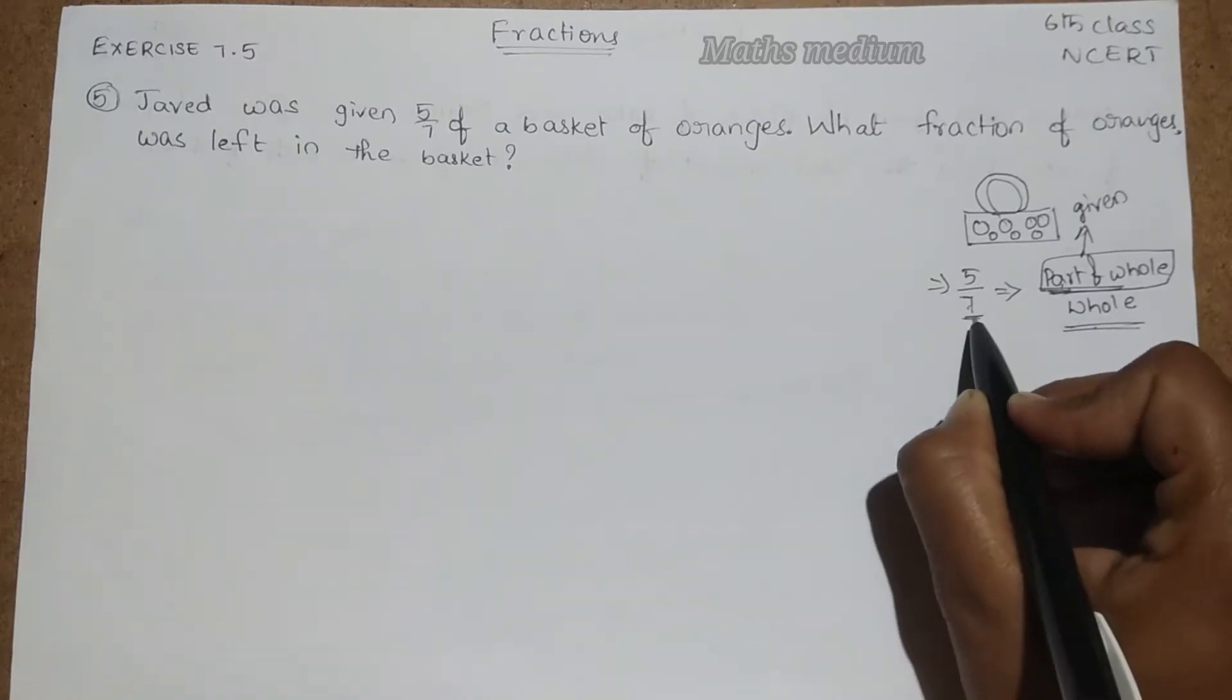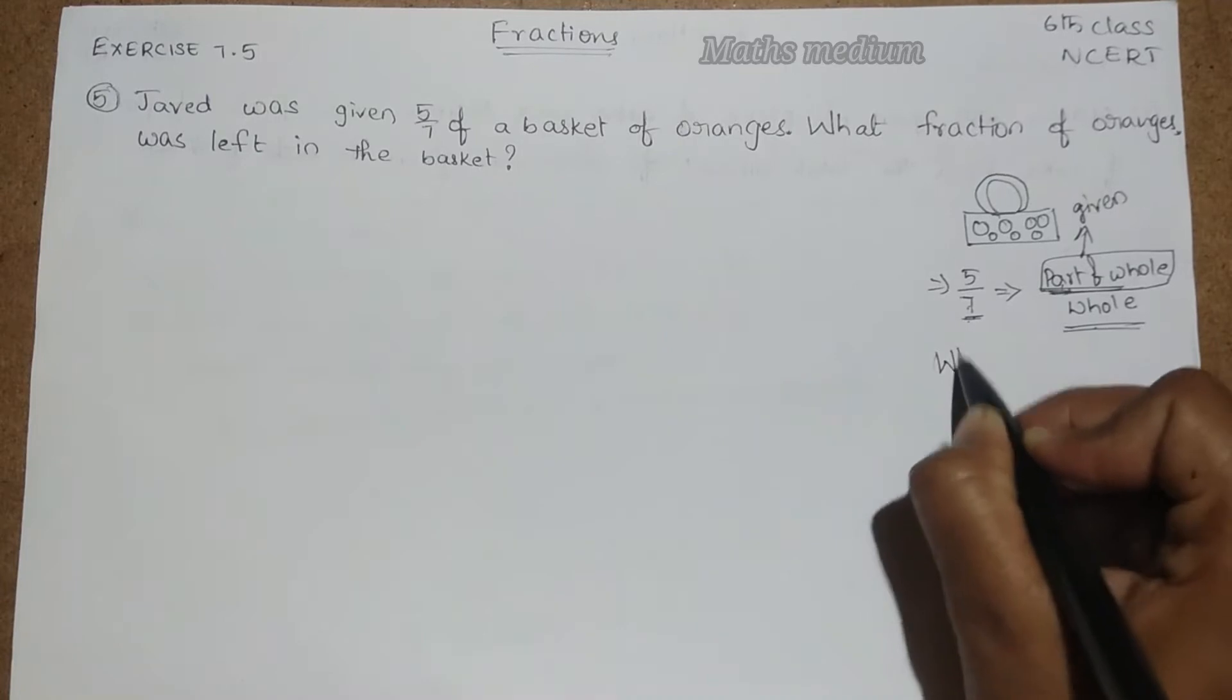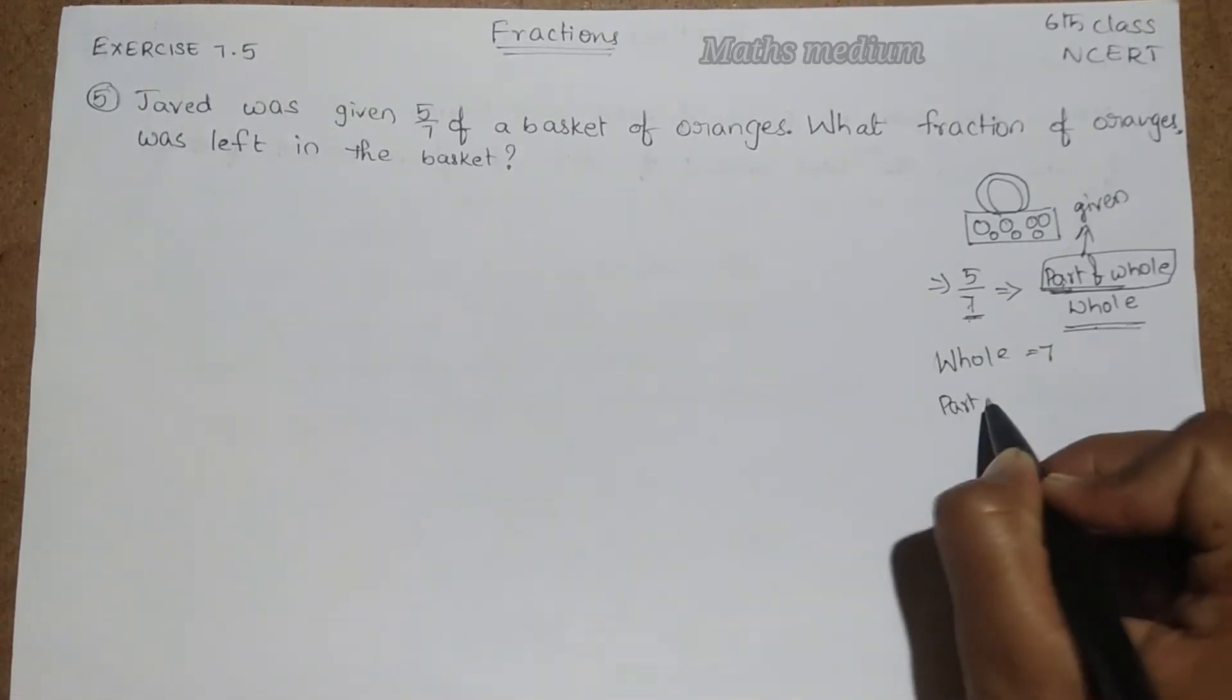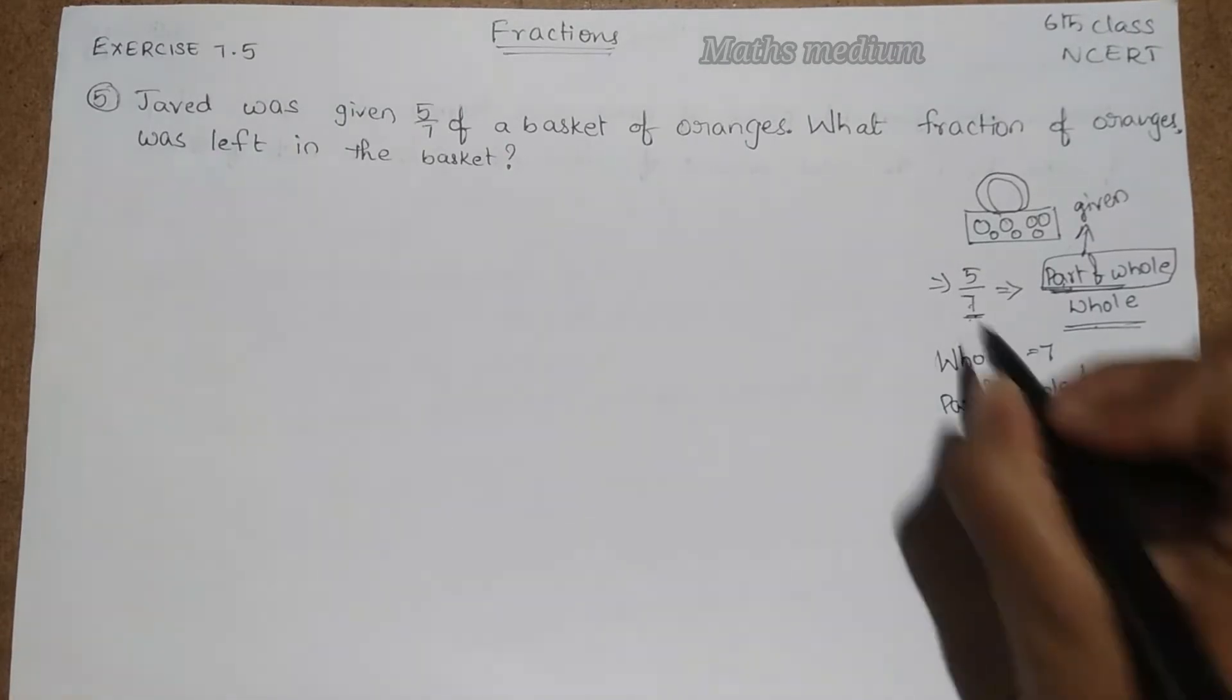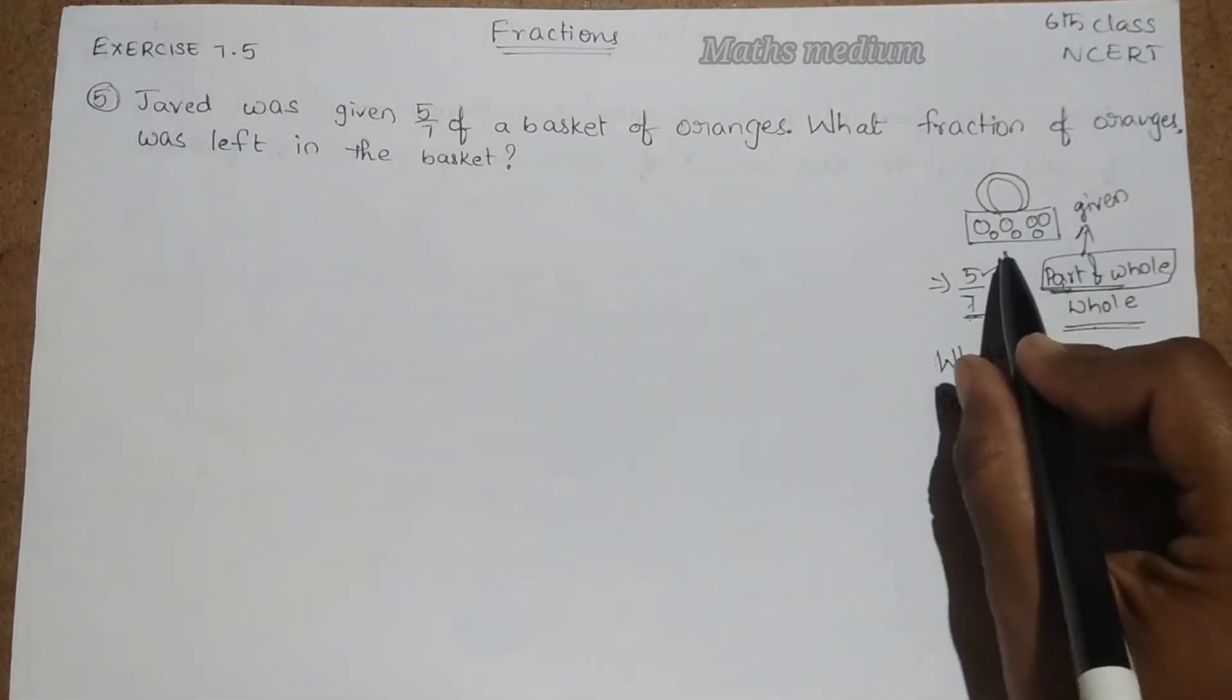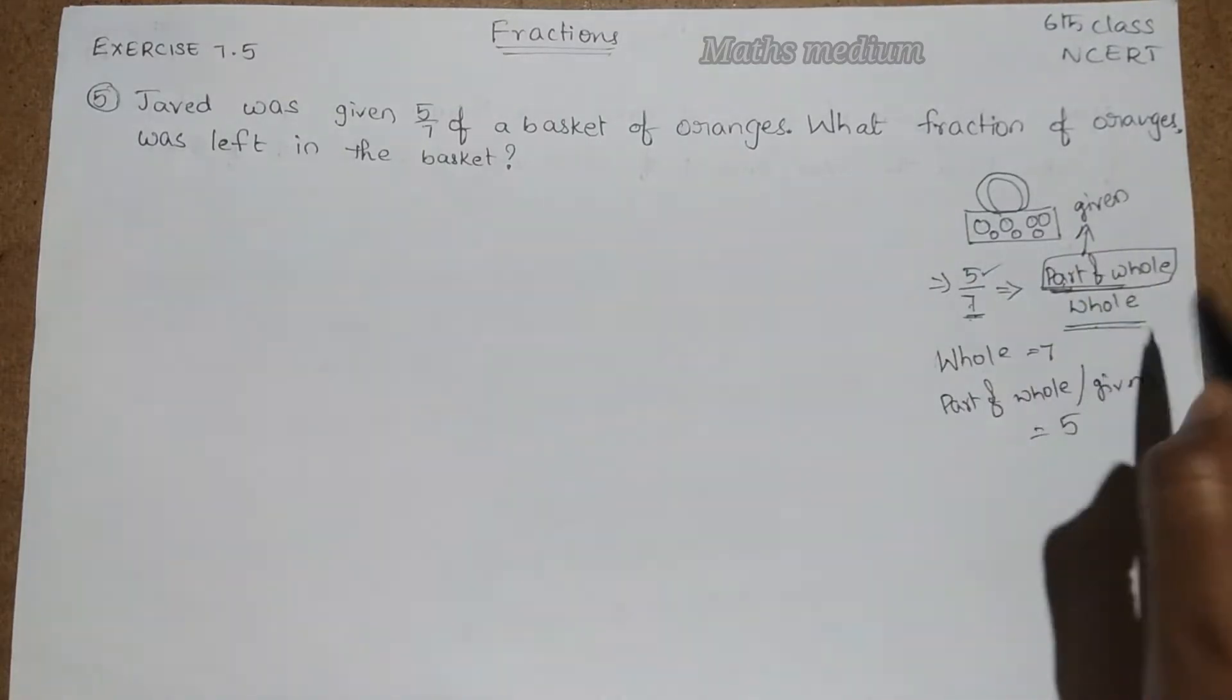See here, this whole is denoted as denominator, that is 7. Here whole is 7. In this basket, how many oranges we are having? 7, because of whole.